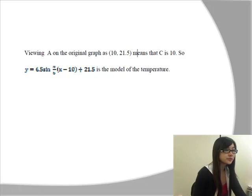Next, we look back at the original graph to find the phase shift. And at the point of 21.5, which is where the cycle starts, it had an x value of 10. Therefore, C is 10. That would be the phase shift.